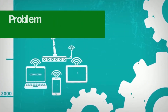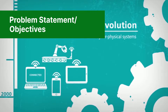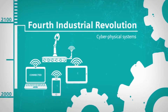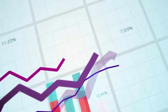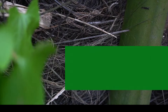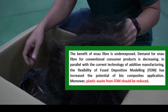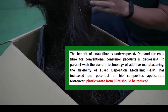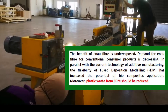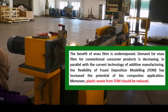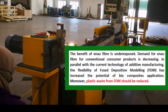The post-industrial revolution is expected to change how we live, work, and communicate. It is also likely to change the things we value and the way we value them in the future. We can already see changing business models and employment trends. The benefits of Nau fiber are underexposed, and demand for Nau fiber for conventional consumer products is decreasing. In parallel with the current technology of additive manufacturing, the flexibility of fused deposition modeling has increased the potential of biocomposites application.